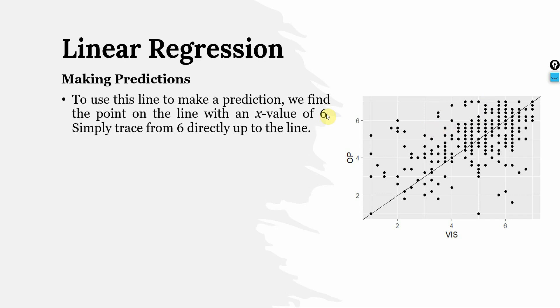To use this line to make prediction we find the point on the line with an x value of 6. Where is x value of 6? Here it is. Simply trace from 6 directly up the line.